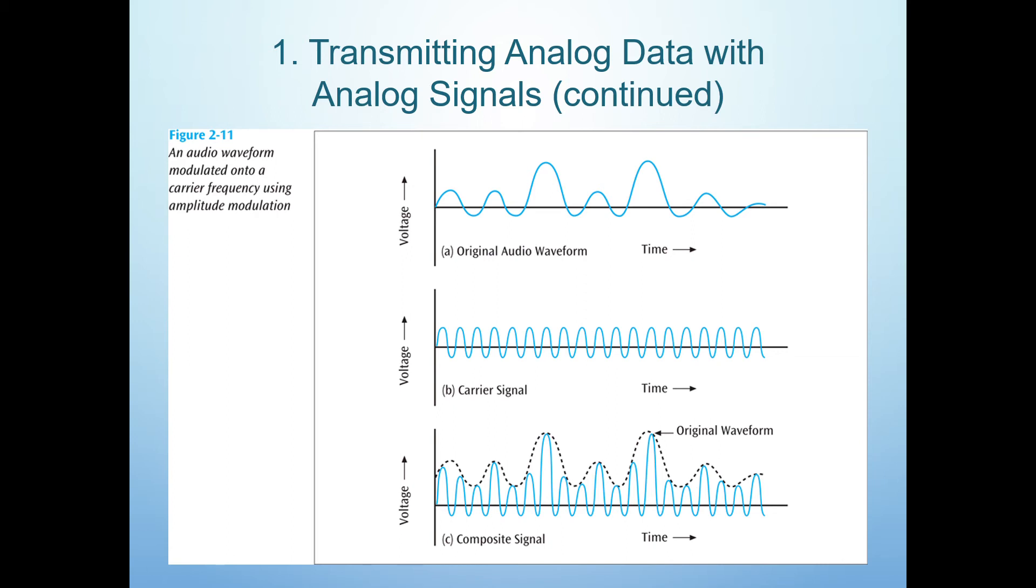This picture shows an AM radio station. The audio data generated by the station is shown as an analog wave in part A. Signal B shows the carrier signal, which is going to be used to transmit the audio data.